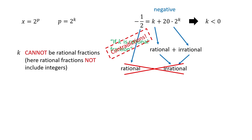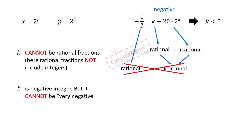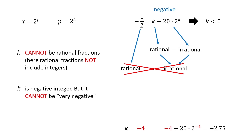Now we have two possibilities for k: a negative integer or a negative irrational number. First, let's consider k as a negative integer, and I will talk about the irrational case later. Note that k cannot be very negative — for example, if we plug in k equal to negative 4, then the right hand side equals negative 2.75, but the left hand side is negative 1 half, so it does not hold. If k is a negative integer less than negative 4, then the right hand side will be less than negative 2.75, so the equation cannot hold. We can rule out all negative integers less than negative 4, leaving only three candidates.